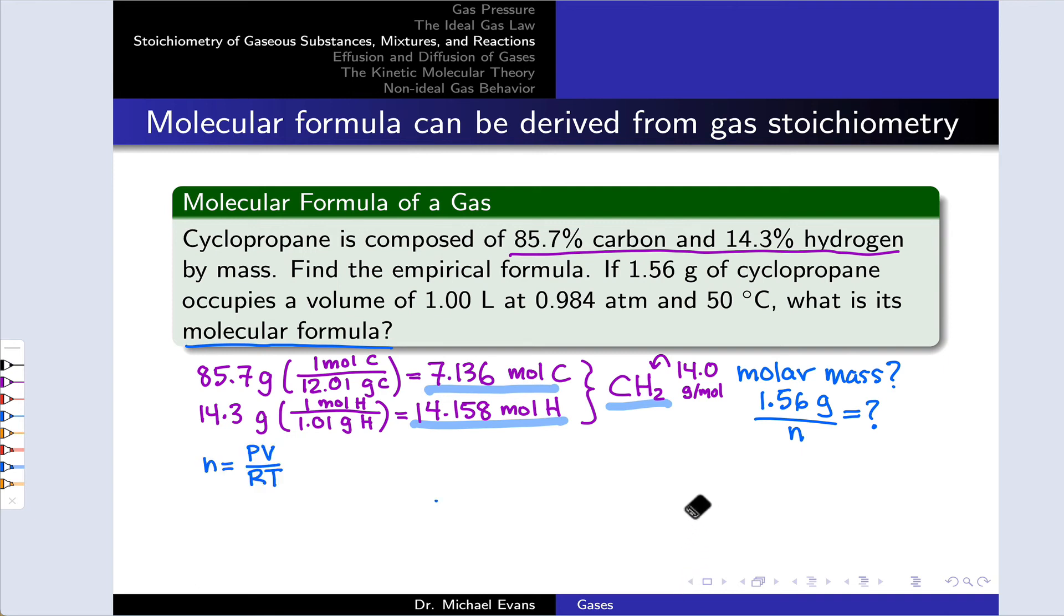The number of moles is PV divided by RT. And when I plug in the numbers from the problem, 0.984 atmospheres, 1 liter, and 323.15 Kelvin, that's 50 degrees C converted to Kelvin, I arrive at 0.0371 moles.